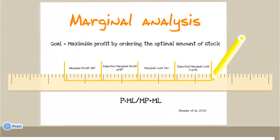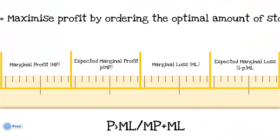The goal in marginal analysis is to maximise profit by ordering the optimal amount of stock. When an additional unit of an item is stocked there are two possibilities: either it will be sold or it will not be sold. P is the probability of selling one extra unit and one minus P is the probability of not selling one extra unit. If the expected marginal profit is greater than the expected marginal loss, an additional item should be stocked. The business should then keep ordering inventory as long as the probability of selling that one extra unit is greater than marginal loss divided by the sum of marginal profit and marginal loss.